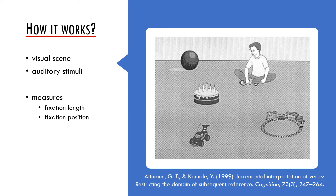So how does the Visual World Paradigm work? Participants always see a certain visual scene. This may be a semi-realistic scene as this one taken from the study by Gary Altman and Yuki Kamide, or it may be a simple array of objects. The participants are also presented with auditory stimuli. In this study the participants heard either the sentence 'the boy will move the cake' or 'the boy will eat the cake.' Notice that it is possible to move all the objects on the scene but only one object is edible and that is the cake.